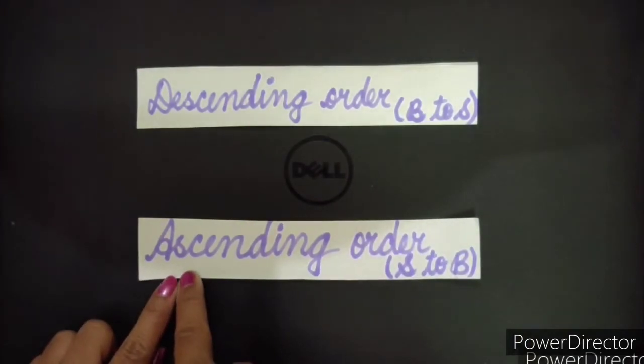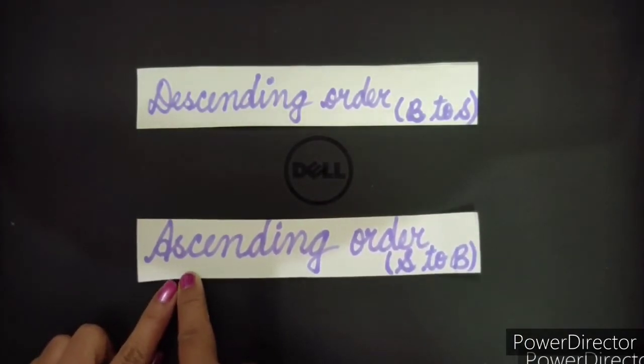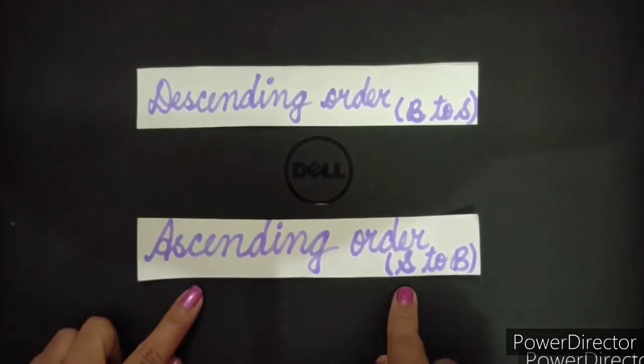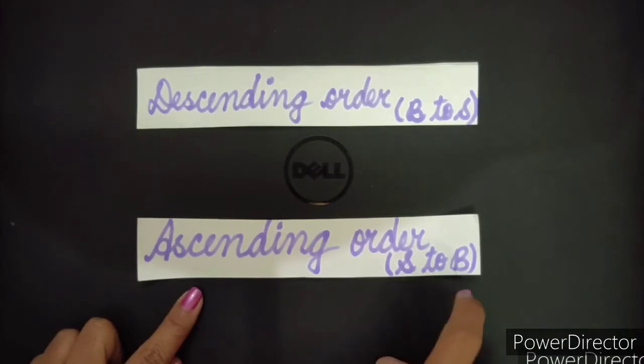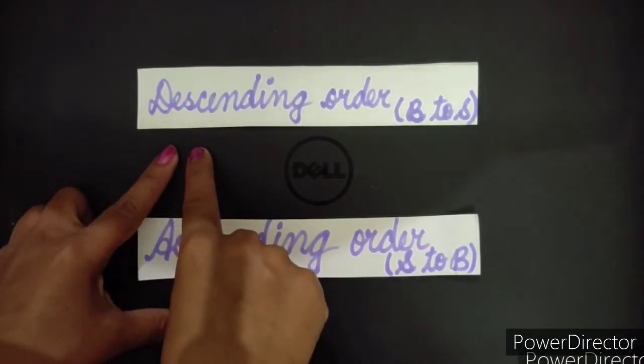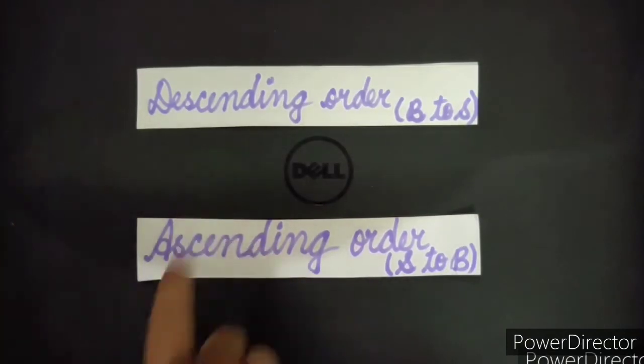Ascending order, increasing order. Ascending order, increasing order, and it is S to B. S to B means small to big, small number to big number. Descending order, decreasing order, decrease hona, kam hona, means big to small.